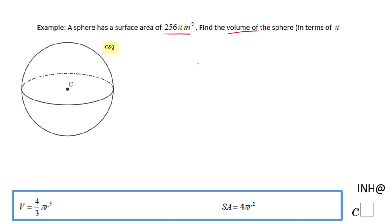As you notice, we have two formulas down here. I'm going to start from the surface area, which is 4πr², and in this formula I'm going to replace the surface area with 256π. I have an equation in r² which I need to solve.